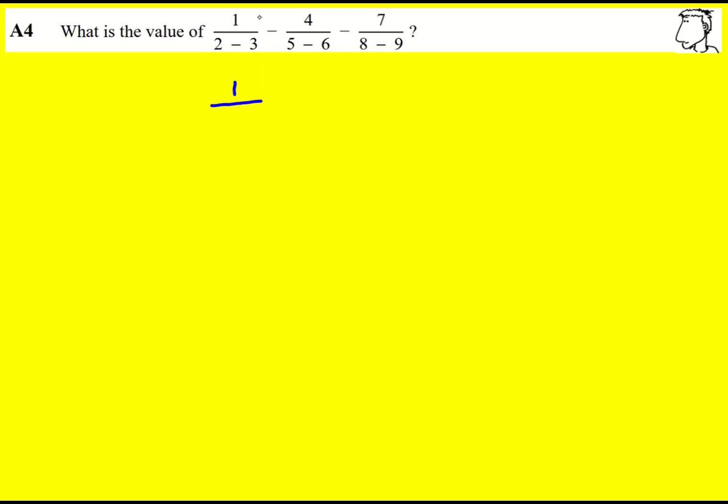Let's work out each of these fractions separately to start with. So 2 minus 3 is minus 1. This can become 1 over minus 1. I'll deal with that in a minute.